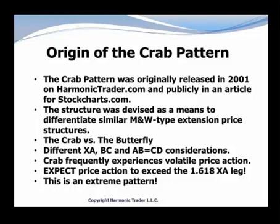This structure was devised as a means to differentiate similar M and W type extension price structures. What we're talking about is the crab versus the butterfly, in much the same way we looked at the difference between the Gartley and the bat. The crab is different in a variety of ways, especially the XA, BC, and AB equals CD considerations. Also, the crab frequently experiences volatile price action — it's a very important anticipation and consideration for executing trades at the pattern completion point.